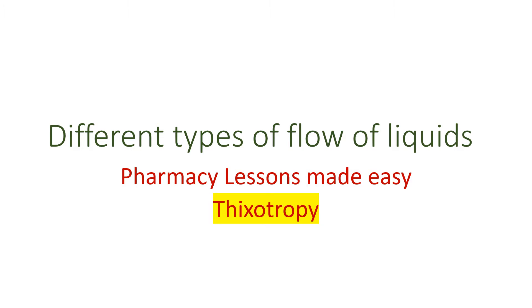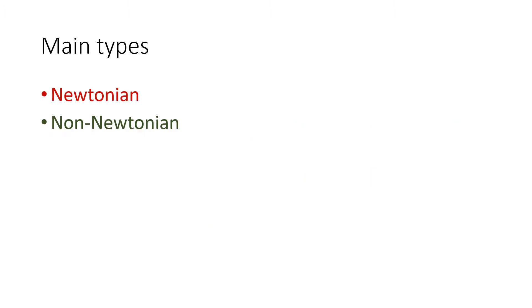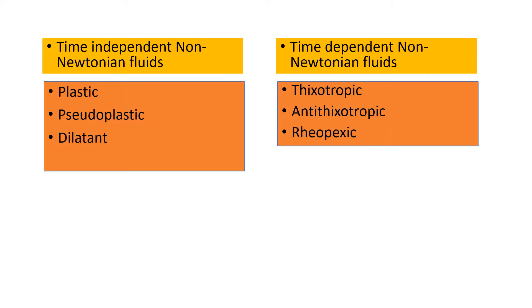So far we have studied different types of fluids. One category follows Newtonian law, so they are called Newtonian liquids, and the second are non-Newtonian ones, further classified on the basis of time-independent and time-dependent categories. In the time-independent category we have already discussed plastic, pseudo plastic, and dilatant types of flow. In this video we shall be talking about the thixotropic type of time-dependent non-Newtonian fluids.